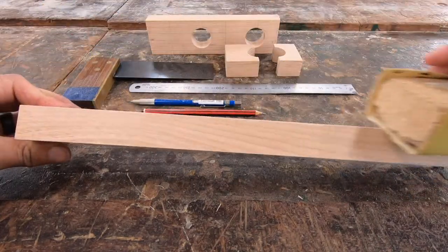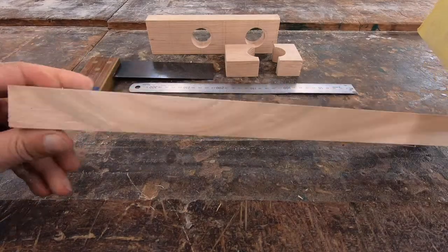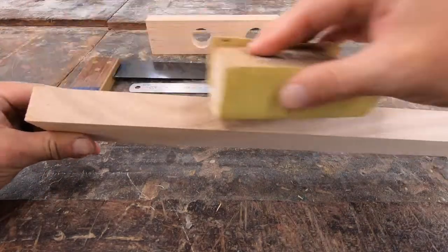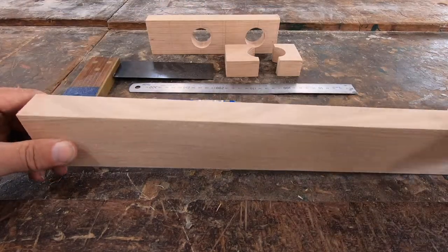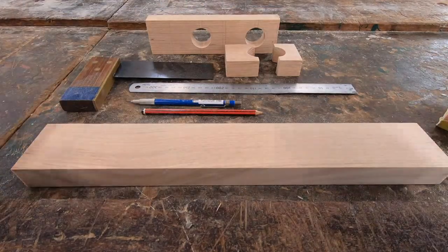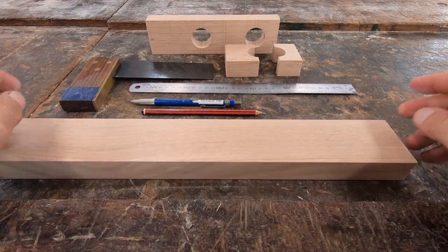Now I'm just sanding the edges here, those corners, just to make them so they're not sharp. We're not going to get any splinters. There we go. So now I'm ready to start marking out for my pieces.